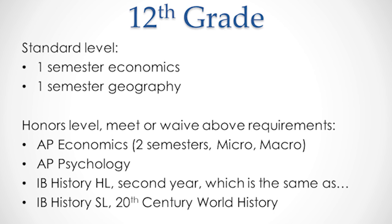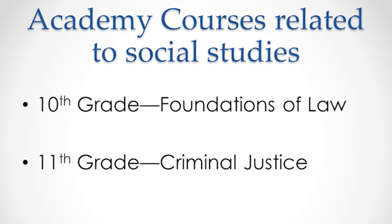In 12th grade, the standard level choices are one semester of economics and one semester of geography. If you want to take an AP or IB course, you have several choices: AP economics — two separate semester courses, microeconomics and macroeconomics with two separate tests; AP psychology, which is a full year; or IB history, specifically 20th century world history. That can be taken as an SL course if you're entering IB history for the first time as a senior, or at the HL level if you took IB as a junior. There are also two academy courses related to social studies: foundations of law in 10th grade and criminal justice in 11th grade.